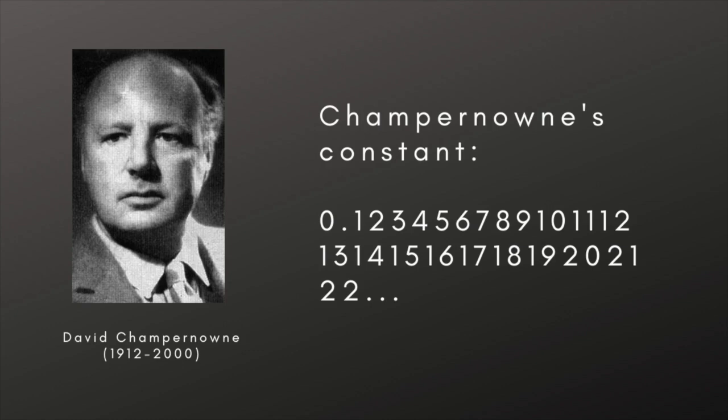Champernowne's constant is made up simply of all the consecutive natural numbers: 0.1234567891011121314, and so on. And therefore it contains every possible sequence of numbers in equal proportions.